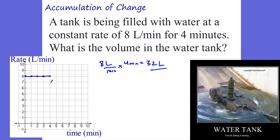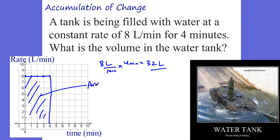What we're really doing here is taking the area of this graph. The area of the graph equals what we call the integral — the accumulation of change. The base is 4 minutes, the height is 8 liters per minute, the minutes cancel out, and you're left with 32 liters. We're just taking the integral, or the area.